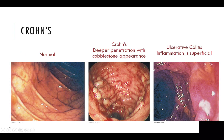The inflammation that occurs in Crohn's disease is a deeper penetration into several layers of the intestine lining, giving more of a cobblestone appearance. Ulcerative colitis is more superficial across the top layer of the intestine lining. The damage that occurs from both disorders can become so severe that surgery may be necessary to remove the affected tissue.